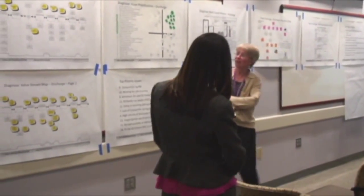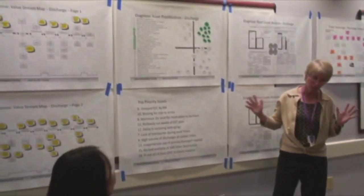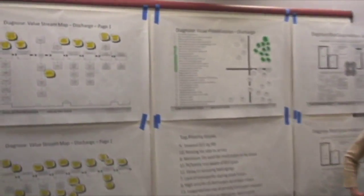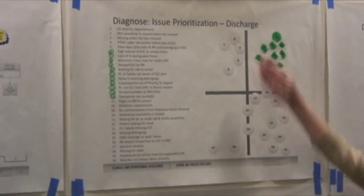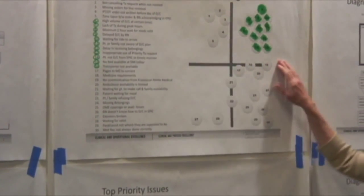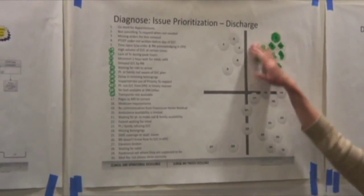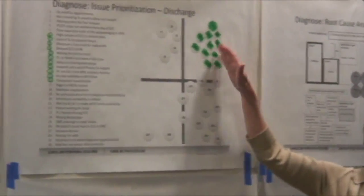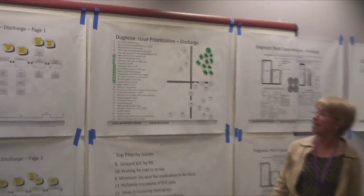We took our 30 splats and listed them. We put them on a chart — this axis is frequency, how often something happens, and the other axis is severity. We looked at all our splats and put them on the chart. We decided the ones in green are the most severe and happen most often — those are the ones we want to pay attention to. We highlighted about 10 in green.